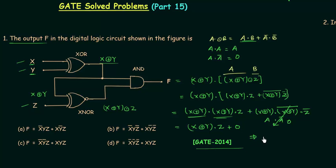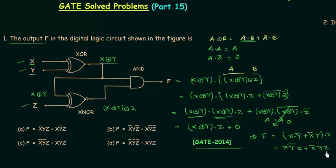So f = (x XOR y) AND z. Expanding the XOR operation: f = (xy' OR x'y) AND z. Applying the distributive law: f = xy'z OR x'yz. Matching with the options, option A is the correct answer: x'yz OR xy'z.